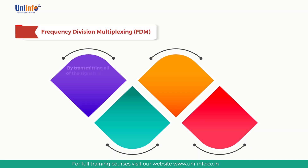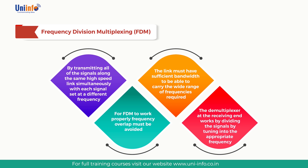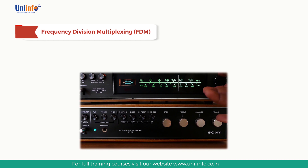Frequency Division Multiplexing works by transmitting all of the signals along the same high-speed link simultaneously, with each signal set at a different frequency. For FDM to work properly, frequency overlap must be avoided; therefore, the link must have sufficient bandwidth to carry the wide range of frequencies required. The demultiplexer at the receiving end works by dividing the signal by tuning into the appropriate frequency. FDM operates similarly to radio broadcasting, where different stations broadcast simultaneously but on different frequencies, and listeners tune their radio to capture the frequency or station they want.